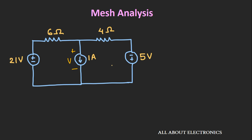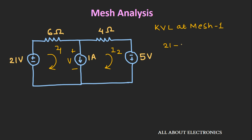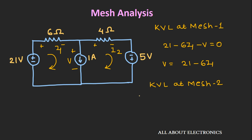Let's first solve this circuit using the normal mesh analysis method. Let I1 and I2 be the currents through the two meshes. Writing a KVL equation for mesh number 1 gives 21 − 6i1 − v = 0, so v = 21 − 6i1. Writing a KVL equation for mesh number 2 gives −4i2 − 5 − v = 0. Comparing these two equations, we can write 21 − 6i1 = 4i2 − 5, which simplifies to 6i1 + 4i2 = 26.